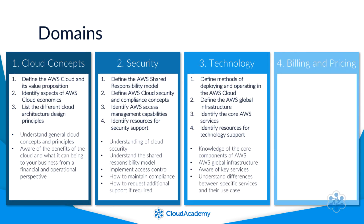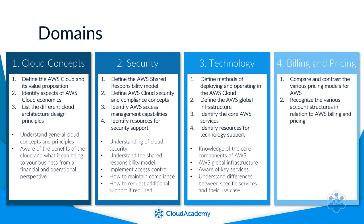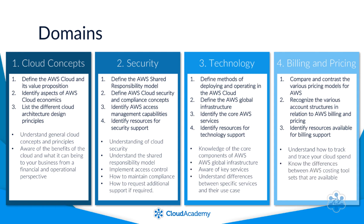Domain four: billing and pricing. This domain assesses you in three areas — compare and contrast the various pricing models for AWS, recognise the various account structures in relation to AWS billing and pricing, and identify resources available for billing support. This domain is all about your understanding and awareness of how to track and trace your cloud spend when using AWS, using a variety of tool sets that are available. Knowing the differences between these tools is essential.